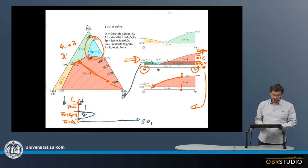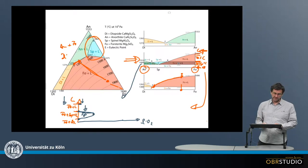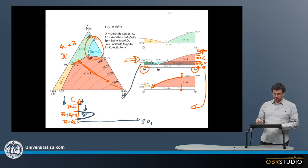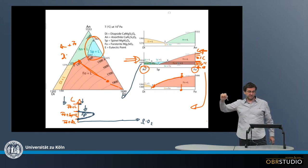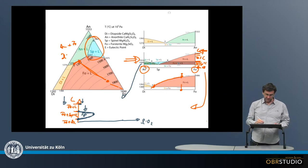So upon cooling: spinel crystallizes more and more, the melt becomes more silicon rich, and then at lower temperatures the spinel dissolves again. The melt becomes less silicon rich down to this point at which there is no more spinel in the melt. This field here is basically the spinel stability field, and this is actually how it really looks if you add quartz to the phase diagram.